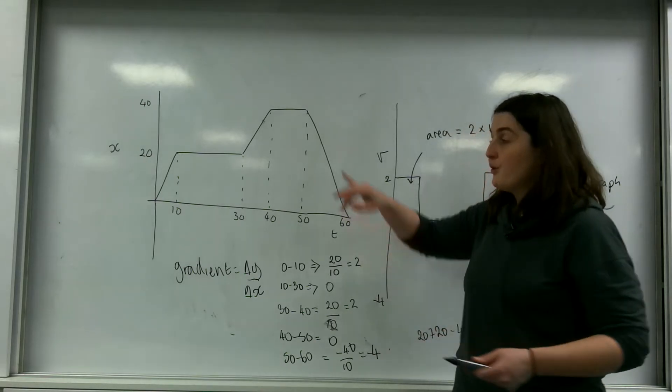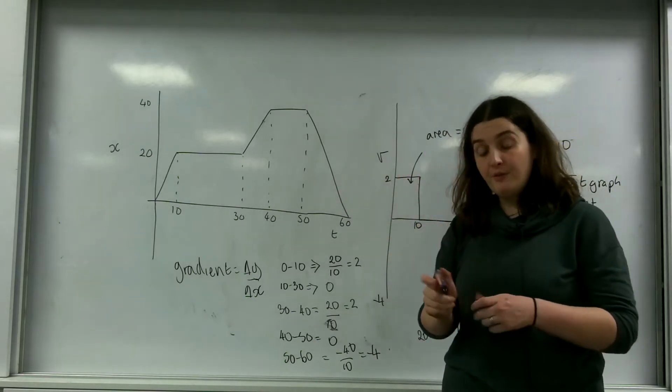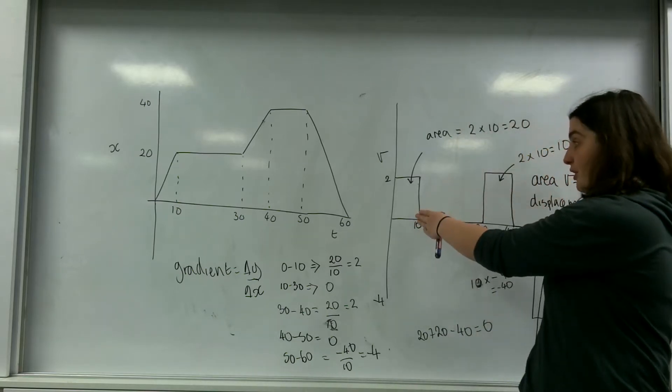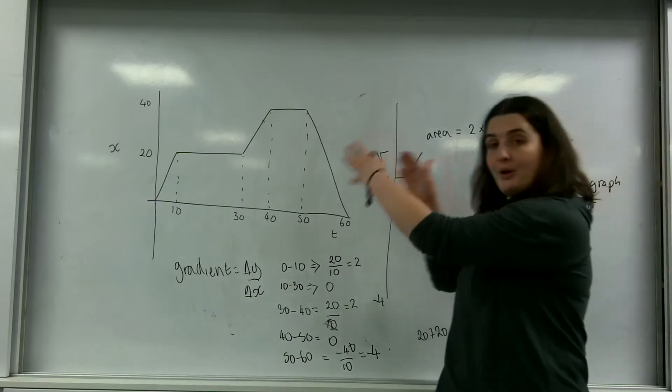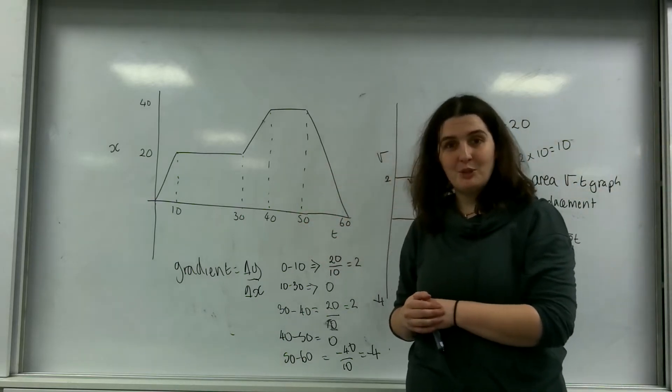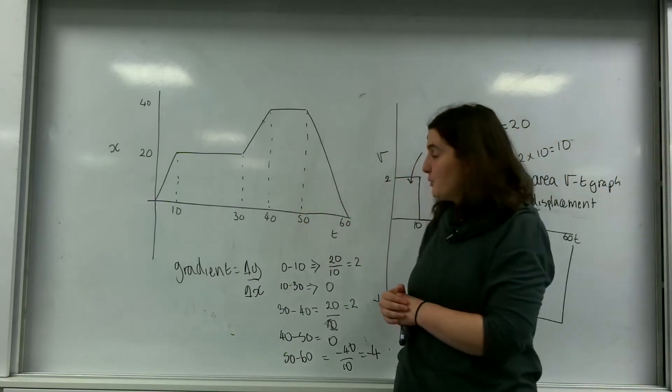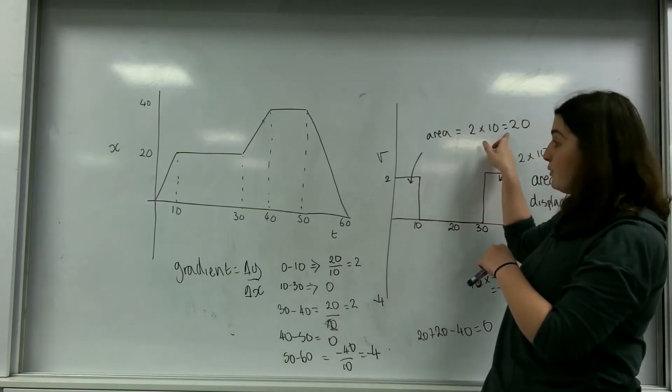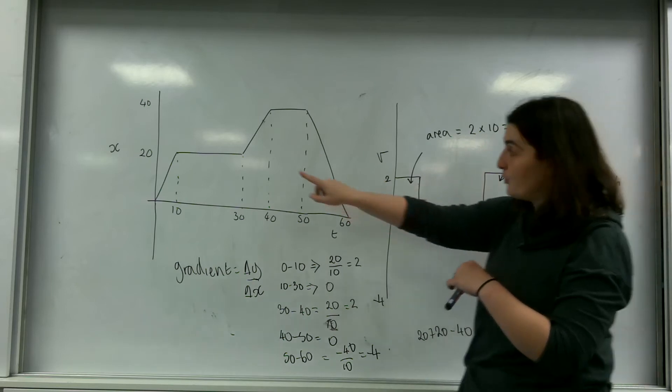And that is how you can read a displacement time graph, plot it onto a velocity time graph, and actually use a velocity time graph to actually work out the total displacement between those times. So I know that if I had this graph here, between 0 and 10, I moved 20 metres. So I went 0 to 20.